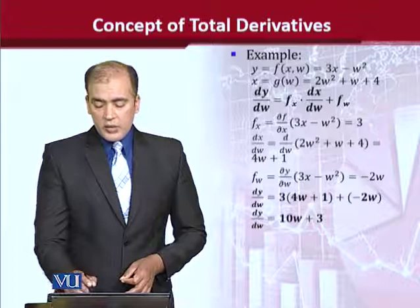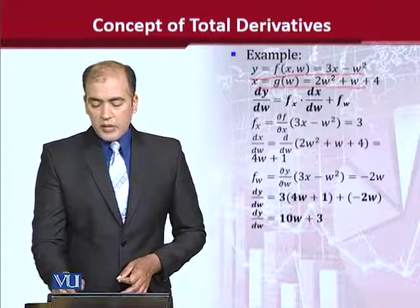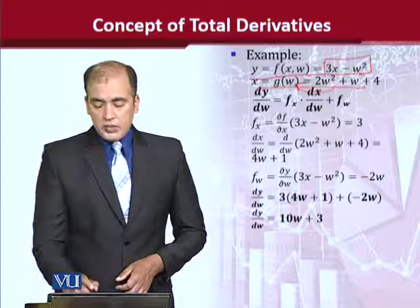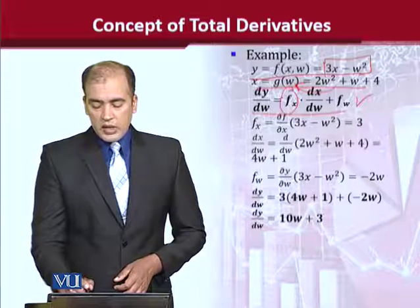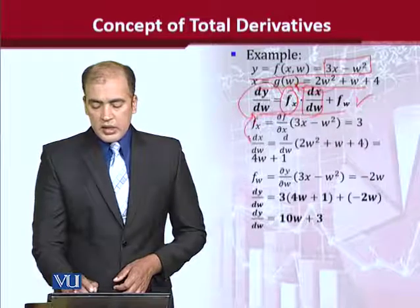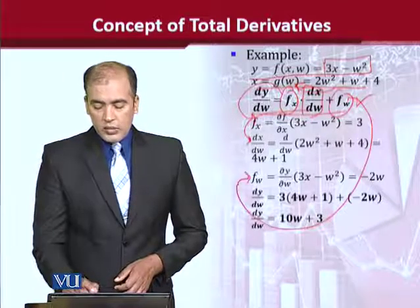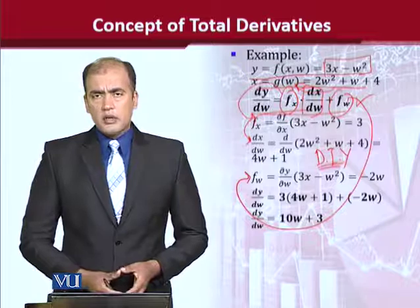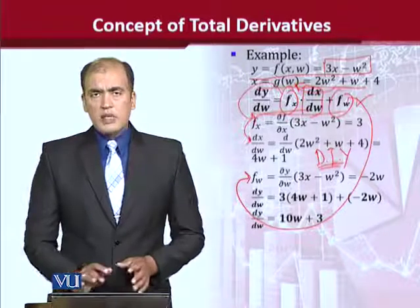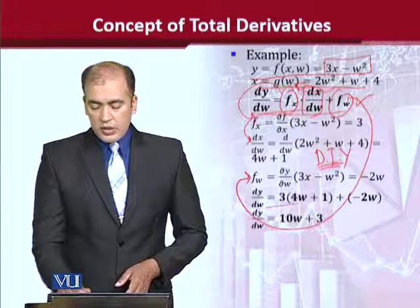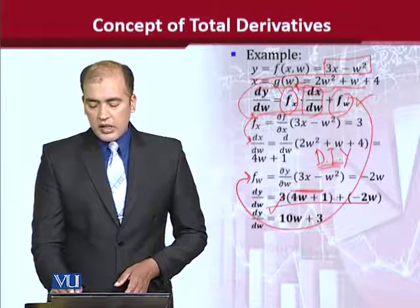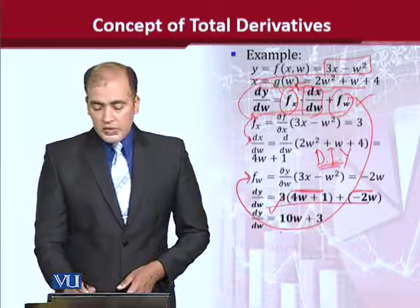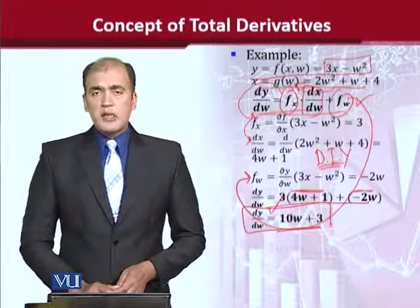Let us take an example. We have a first function where x and w are both independent variables, and a second function where w determines x. As per the formula for the total derivative, we calculate the terms: the partial derivative f with respect to x, multiplied by dx/dw, and the partial derivative f with respect to w. After doing these calculations and putting in the values, we simplify to get the total derivative.